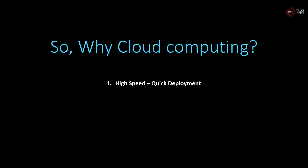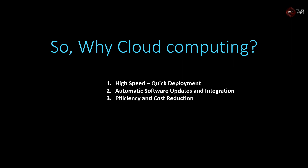Now we have seen some of the differences between on-premises and cloud computing. So why cloud computing, and when to go for cloud computing? Cloud computing is great for high-speed, quick deployment since we can use services which are readily available instead of building from scratch. There are automatic software updates and integration as it is fully managed by the providers. The cost is less and it is more efficient. There is also unlimited storage capacity — cloud storage is extremely cheap. It is also highly scalable, meaning we can buy compute power such as CPU and memory from the cloud provider based on requirements, and we can always extend it further.